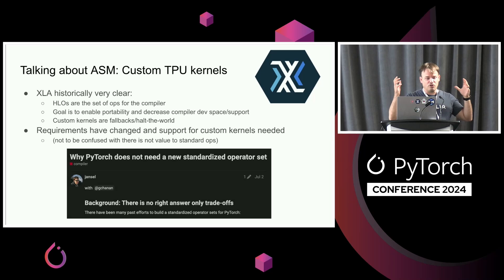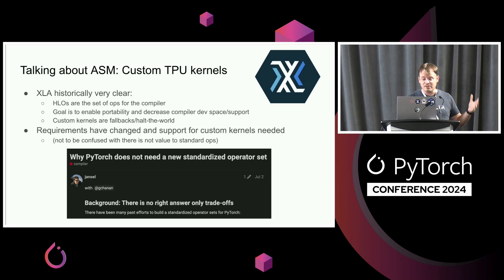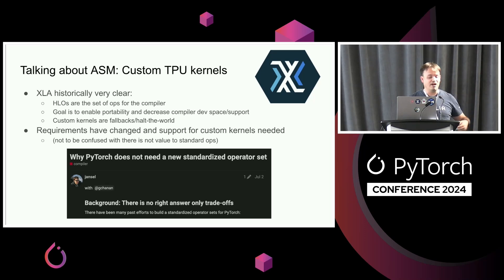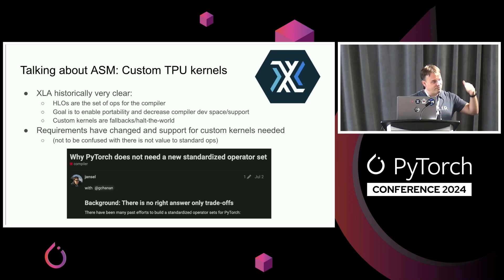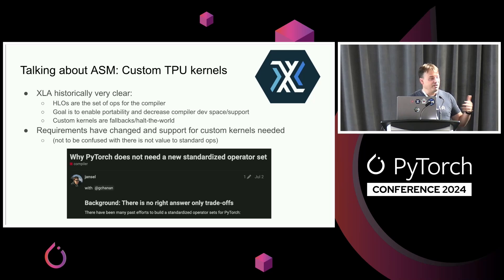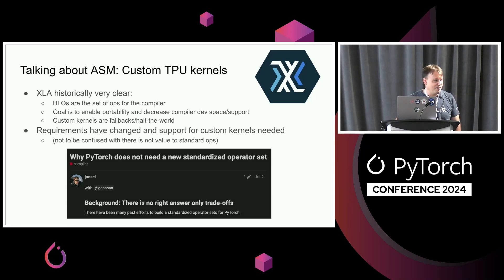For a lot of this work you actually need to be able to write intrinsics and write the assembly. One of the things happening in TPUs is the ability to write custom TPU kernels. Historically, XLA was very clear: HLOs are the set of ops. The goal was to enable portability, decrease compiler developer support, and make it more maintainable by constraining the op set. Custom kernels were initially introduced as a fallback — a hello-world kind of thing. If you used them, your performance degraded and you accepted it. But the requirements have changed as ML models have changed, and support for custom kernels has been felt more and more — not just in OpenXLA but also in PyTorch.